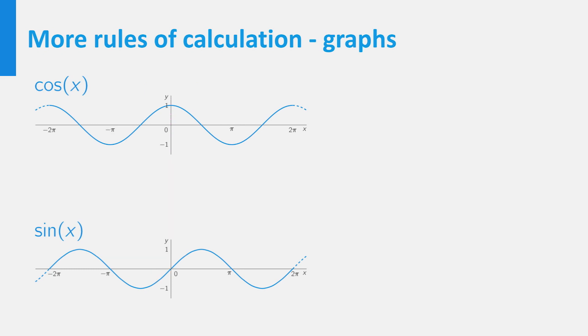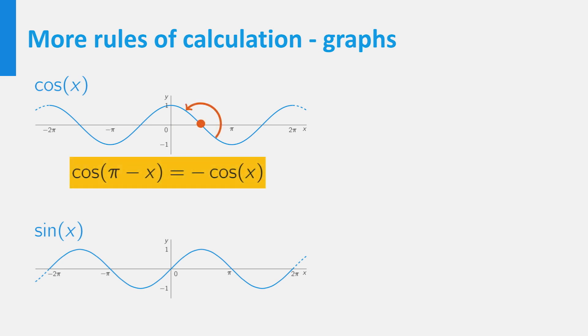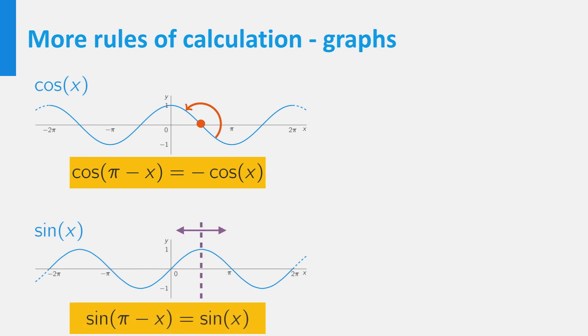The graph of the cosine also shows that the cosine of pi minus x equals minus the cosine of x, and the graph of the sine also shows that the sine of pi minus x equals the sine of x.